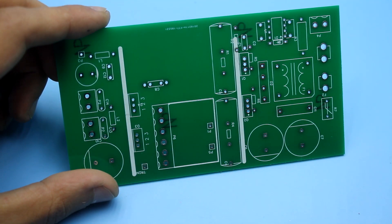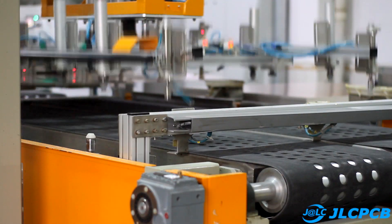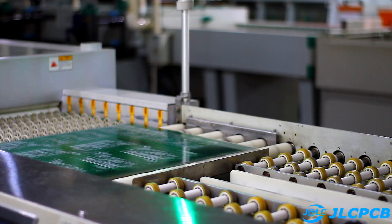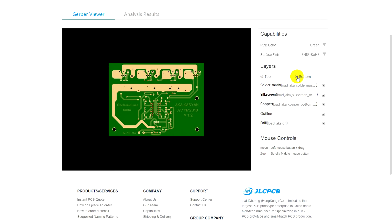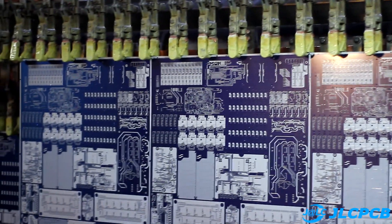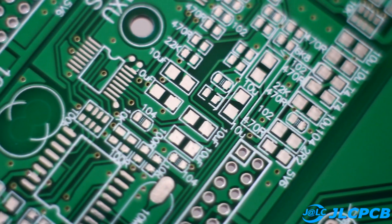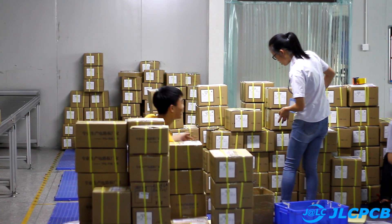But before we start, a few words about the sponsor of this video, about the company JLCPCB, which is one of the leaders in the field of production of printed circuit boards. You can order PCB of any complexity at the lowest prices. The price starts from $2 for 10 pieces. JLCPCB production is back to its normal work. Feel free to order PCB, SMT, and Stencil. All links are in the description.